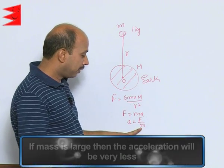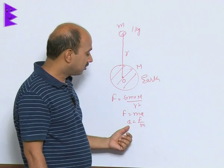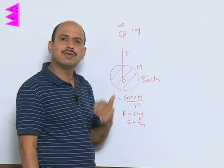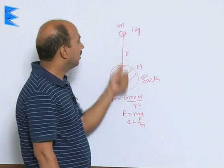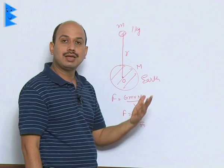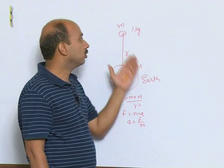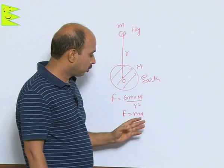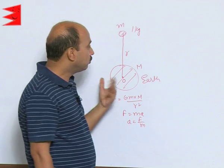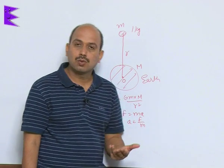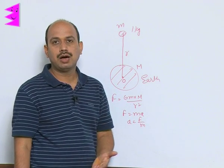If mass is very large, acceleration will be very less. Acceleration produced in the Earth is very very less, almost negligible, but acceleration produced in the mass of 1 kg is much larger. We can observe only the acceleration of this 1 kg, we cannot observe acceleration of Earth. That is why we say whenever any object is dropped from a height, only the stone, that object, falls down. Earth does not move upward.